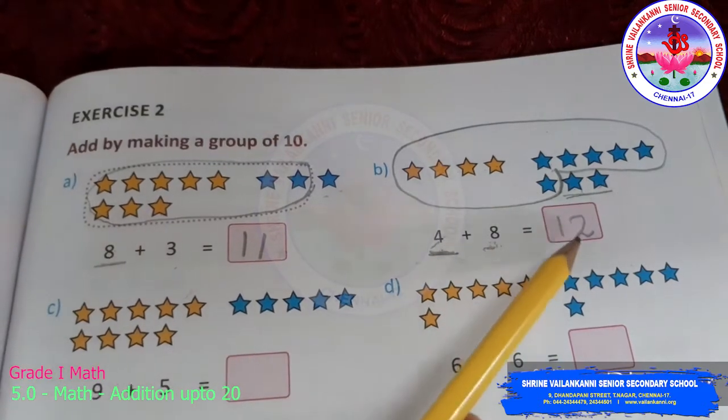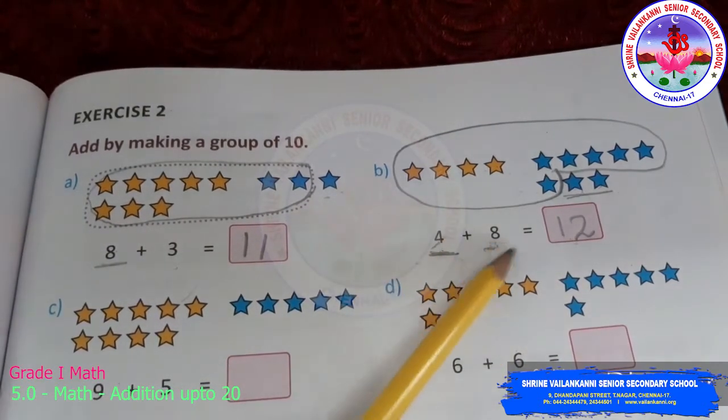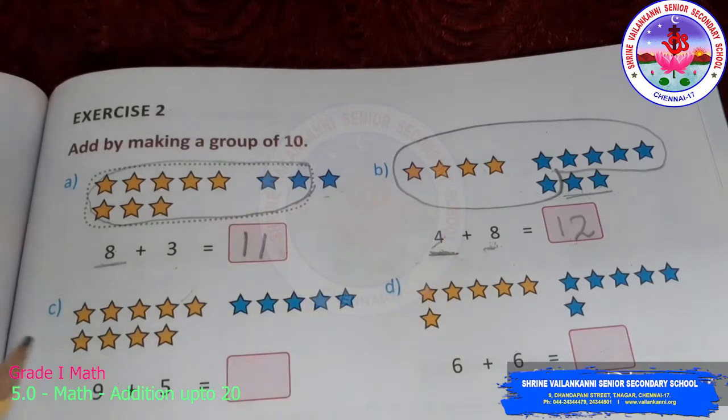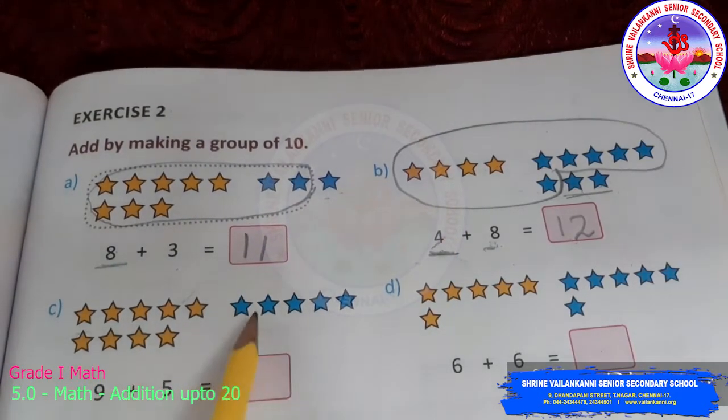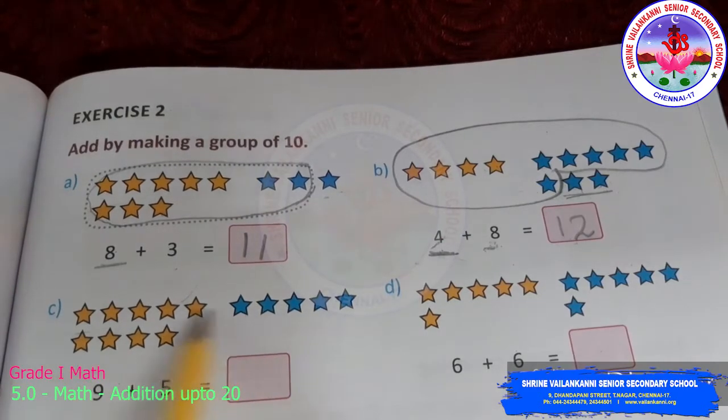You can check the answer by keeping 8 in the mind and 4 in the fingers. After 8, 9, 10, 11, 12. So, you can also check the answer by addition by counting forward also.